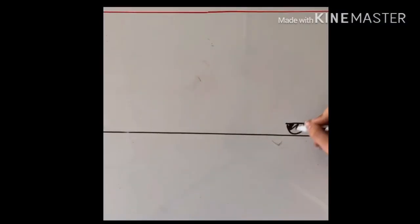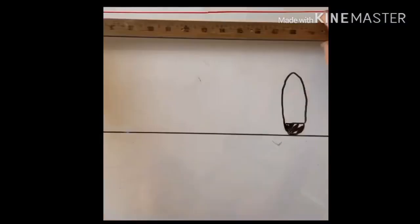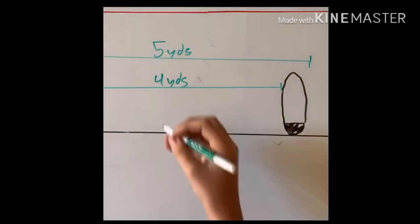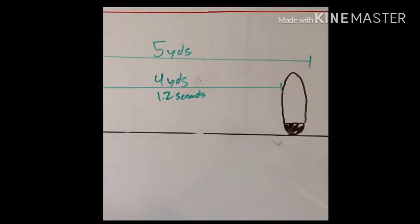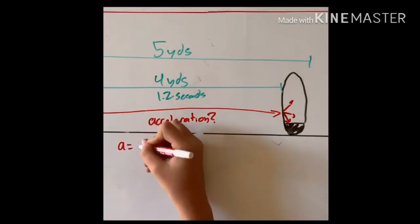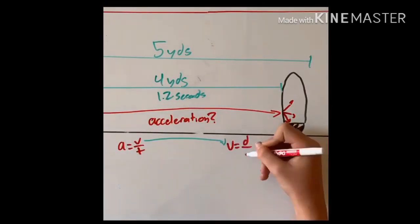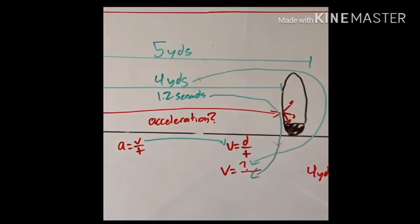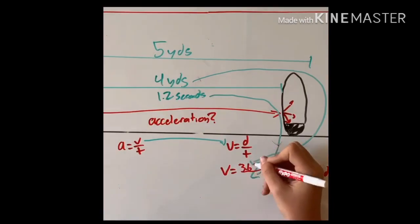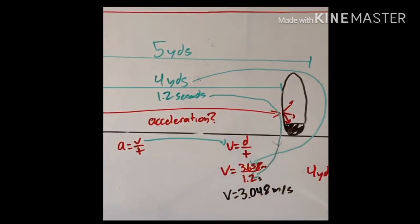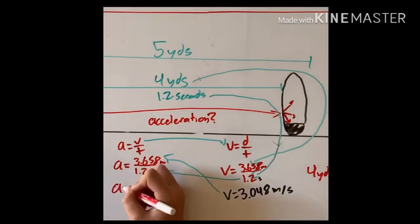On average, the linebacker is roughly five yards away from the quarterback. If our linebacker wanted to form a sack, what would his acceleration be? We knew that Ben had to travel four yards, and he did this in roughly one second. Using this, we found that Ben was accelerating at about 2.5 meters per second squared.